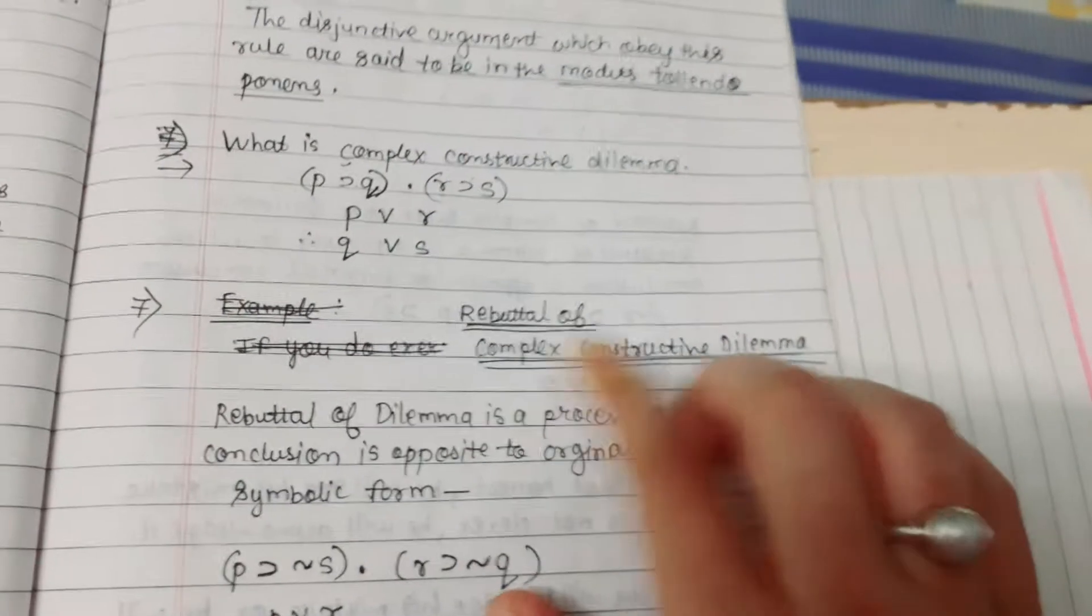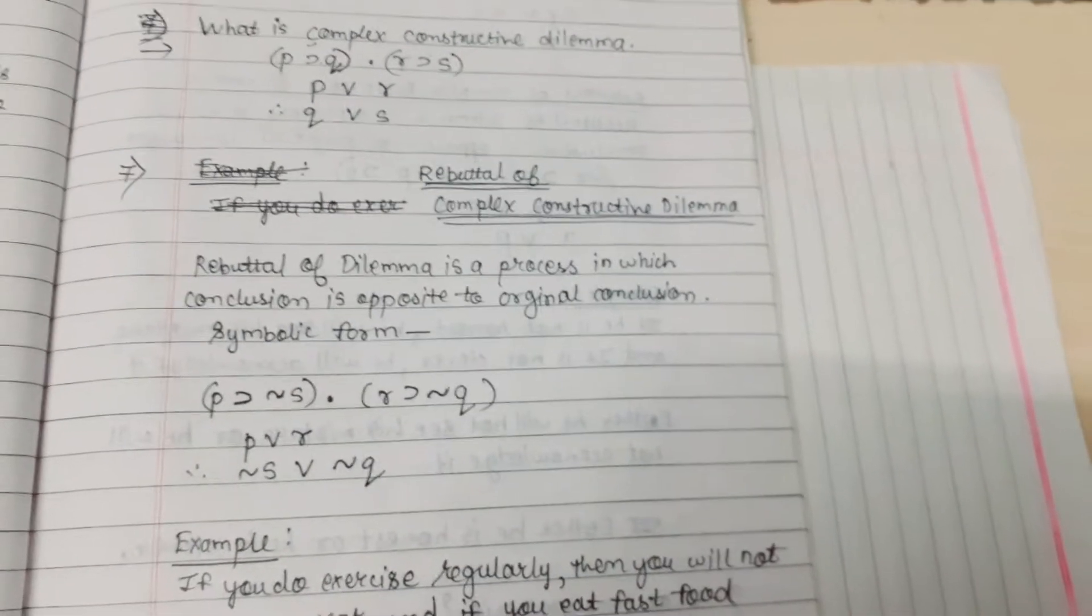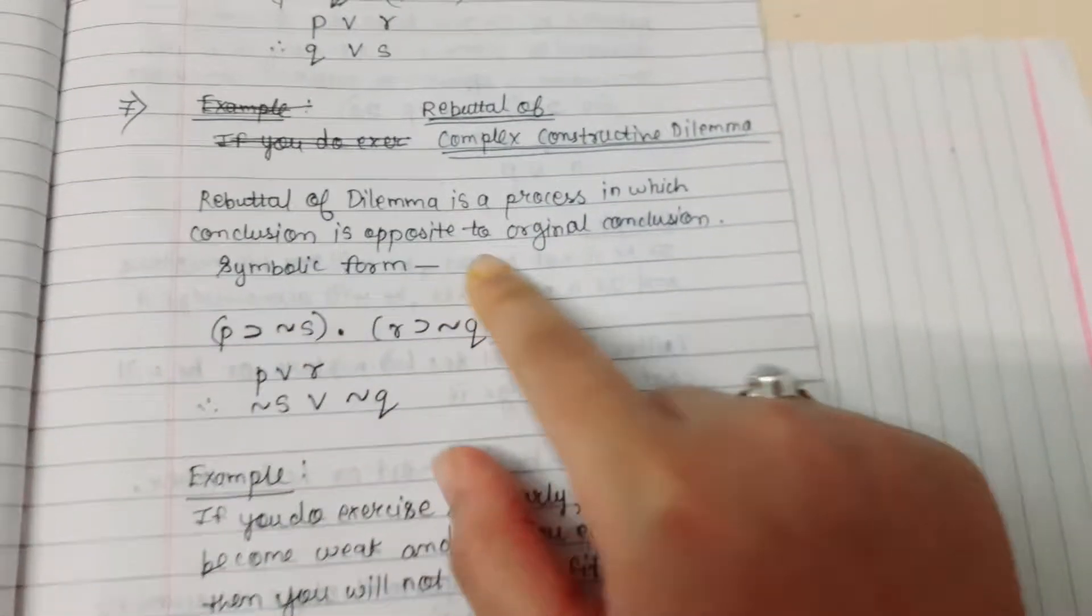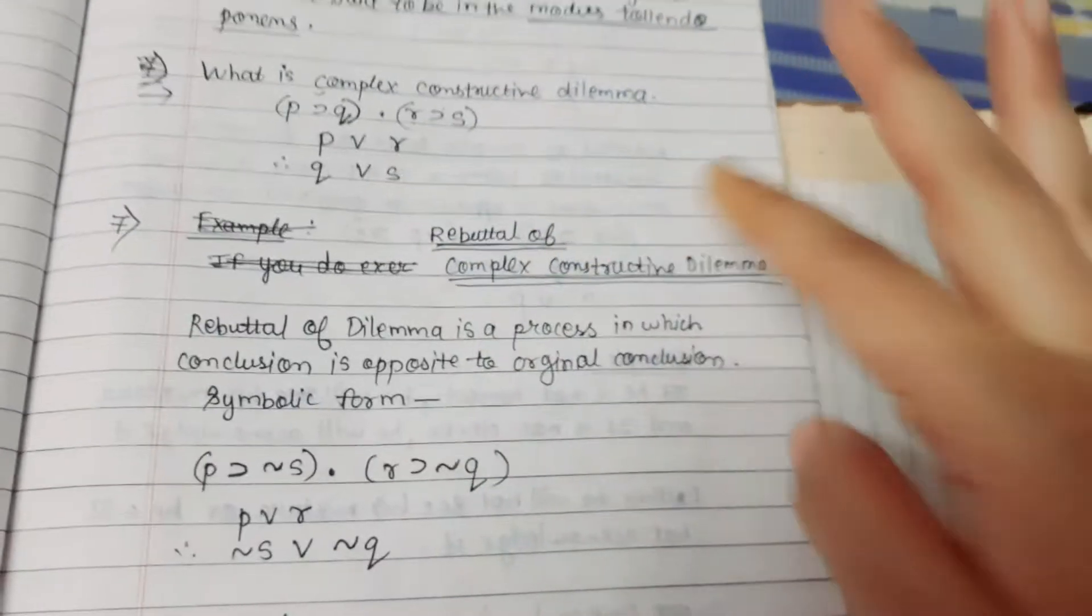Then the question is asked: Rebuttal of complex constructive dilemma. So first, Rebuttal means a process in which the conclusion is opposite to the original conclusion.